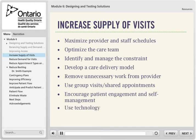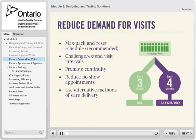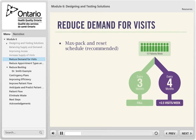Electronic medical records, email, and patient portals are strategies that can reduce demand for face-to-face visits or make them more efficient. These strategies can help you establish that critical balance between supply and demand. Max packing a visit — doing as much as possible during a visit — may reduce the need for future visits, address health issues earlier, and perhaps prevent others.